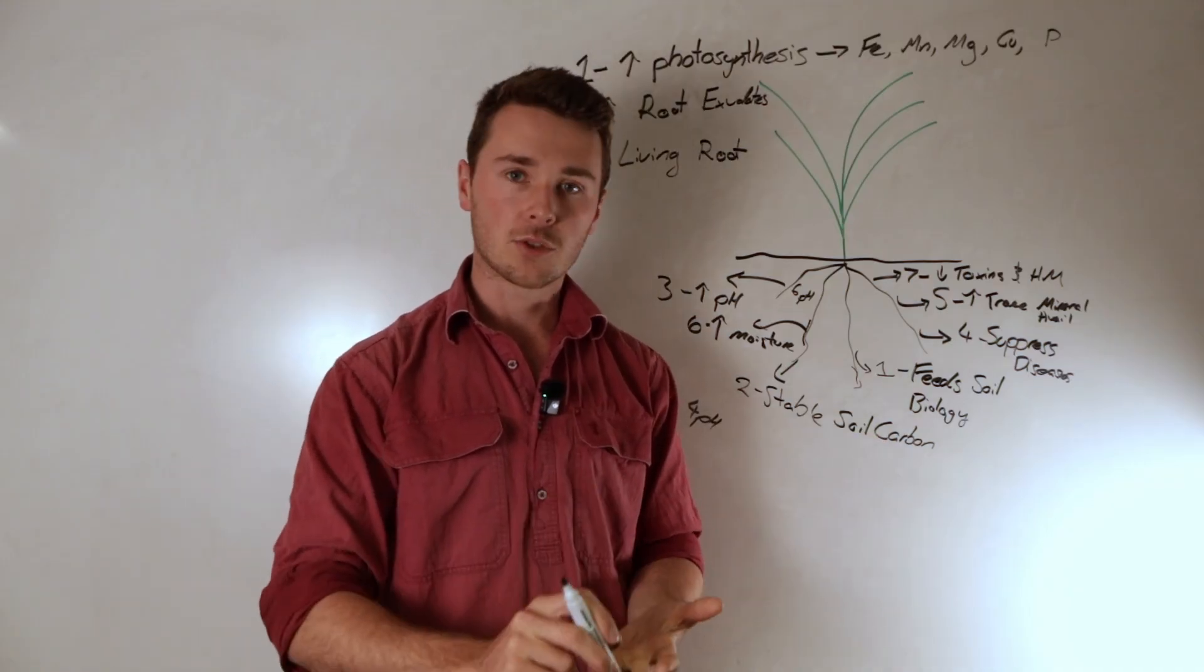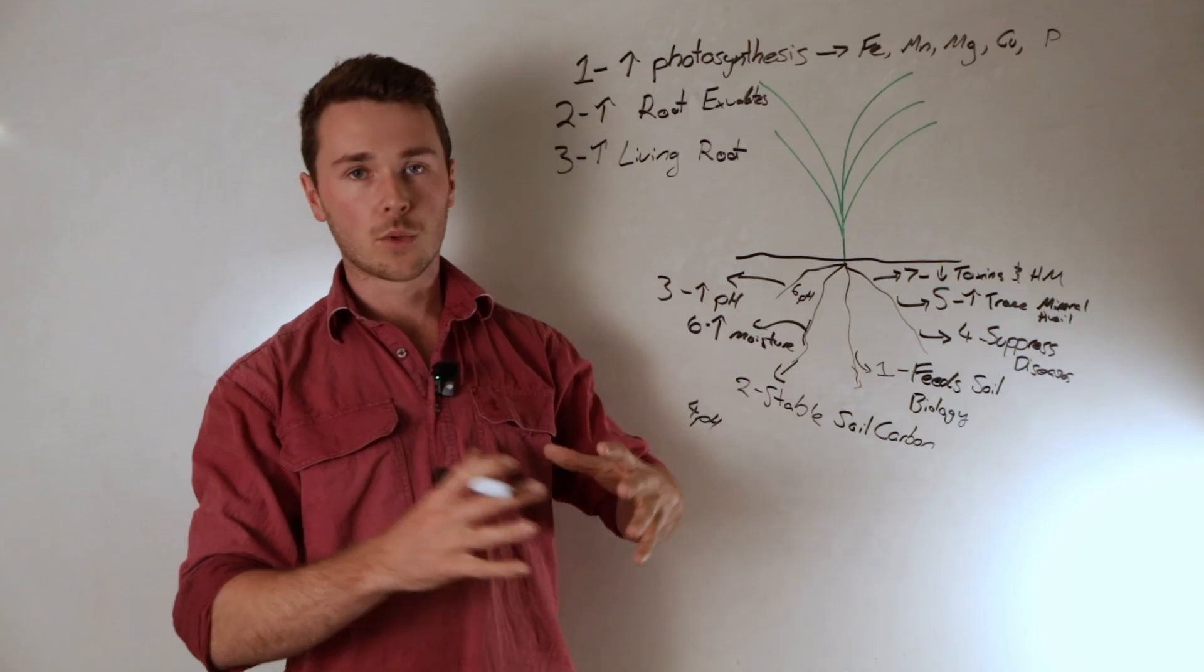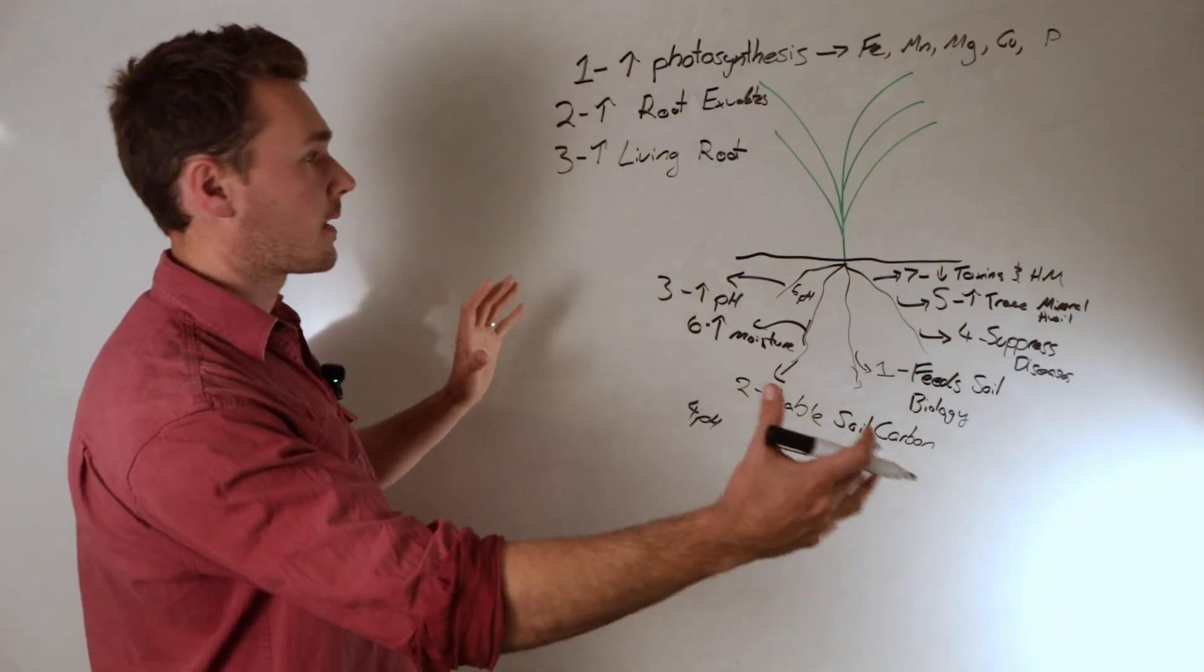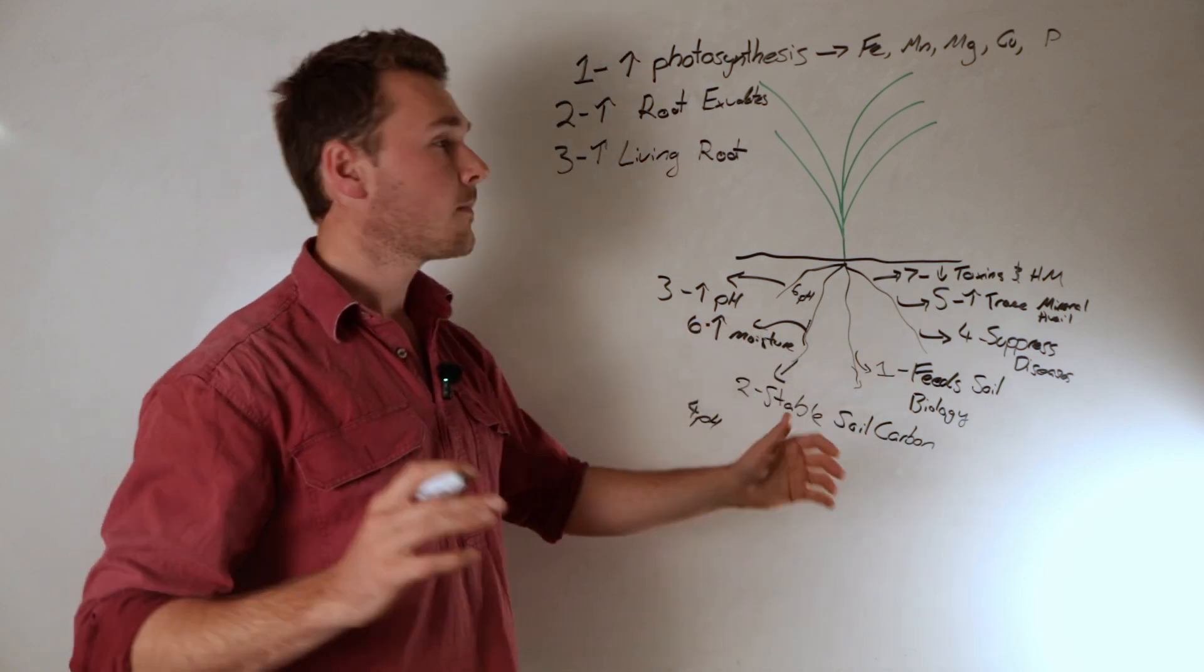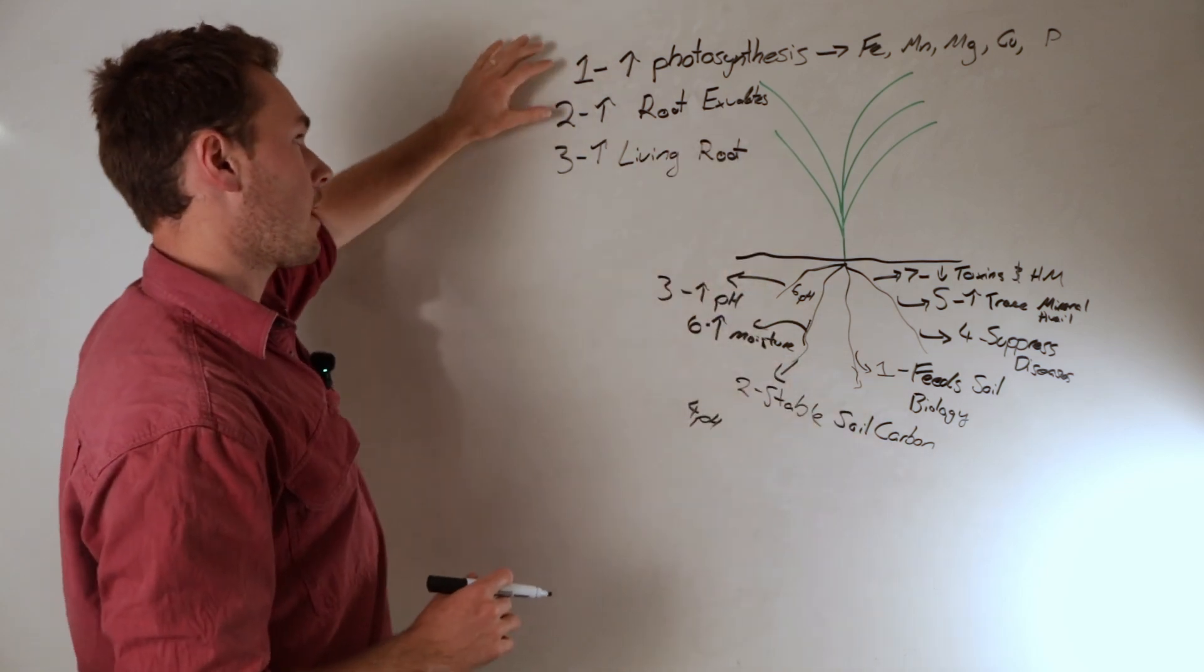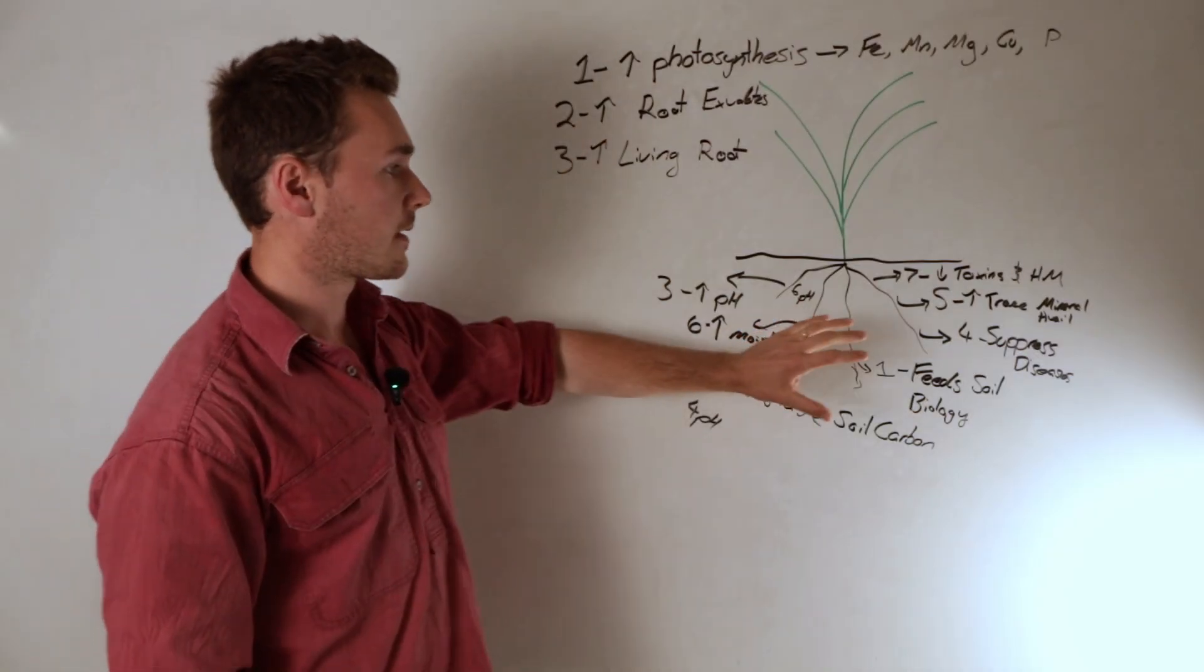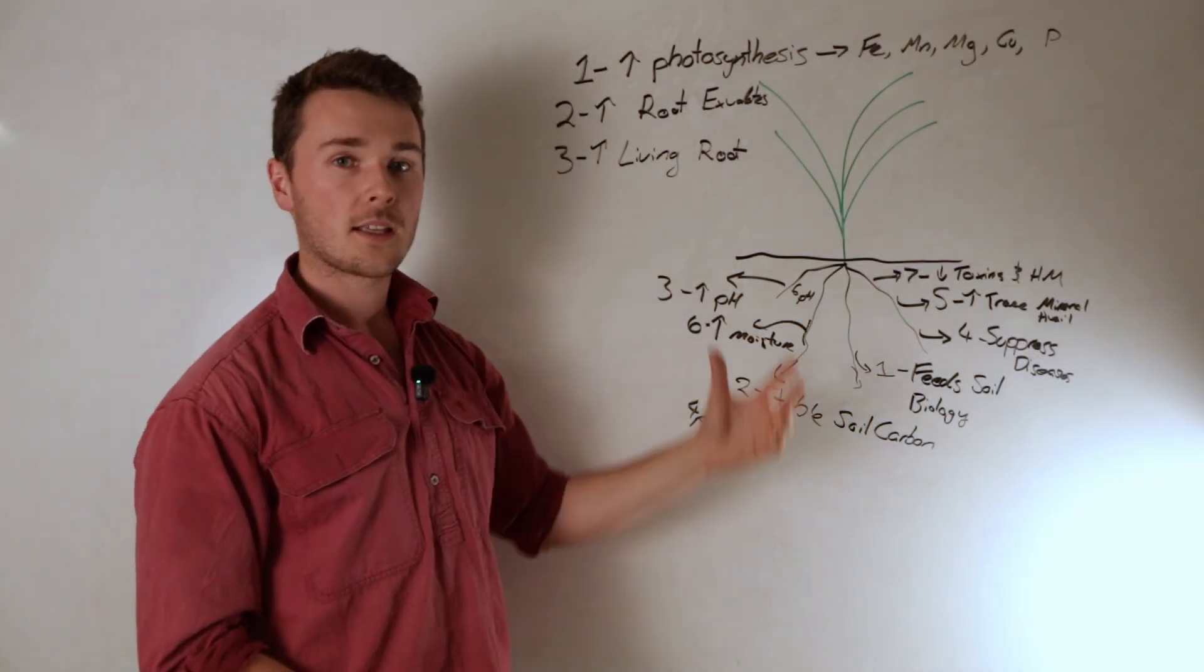That's things like cover crops, pasture cropping, even intercropping where we have more roots, more plants growing across the whole year. Increasing the amount of photosynthesis and therefore the root exudates across the whole year, as well as the amount and making sure that a lot of those root exudates actually go into the ground, can really stimulate the amount of biology in your soil.